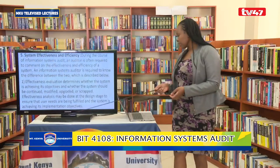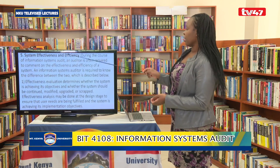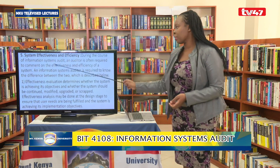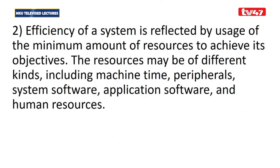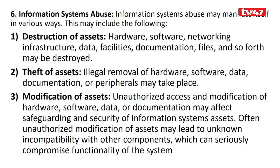Another requirement is system effectiveness and efficiency. During IS Audit, an auditor is required to comment on both. Effectiveness is about determining whether the system is achieving its objectives — ensuring organizational goals are met. Efficiency is about optimizing resource usage, reflected by using the minimum amount of resources to achieve objectives, which we call optimal operations.